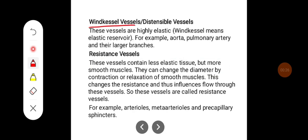Windkessel vessels are distensible vessels — these vessels are highly elastic. Windkessel means elastic, as in a reservoir. For example, the aorta, pulmonary artery, and their larger branches.